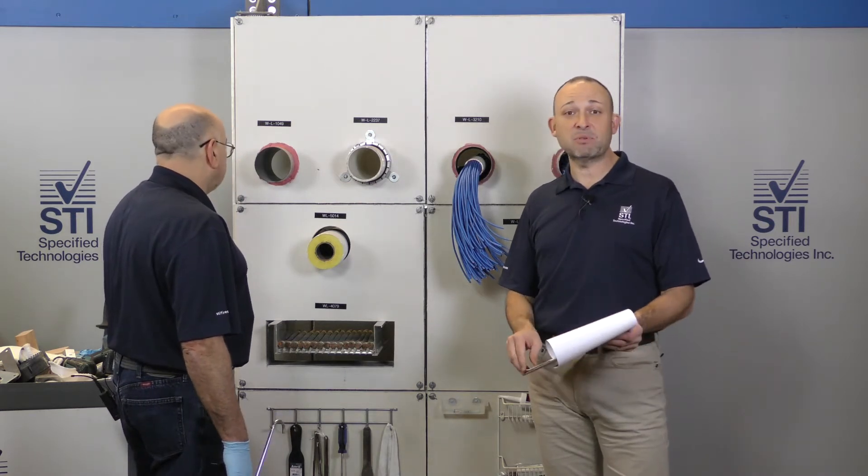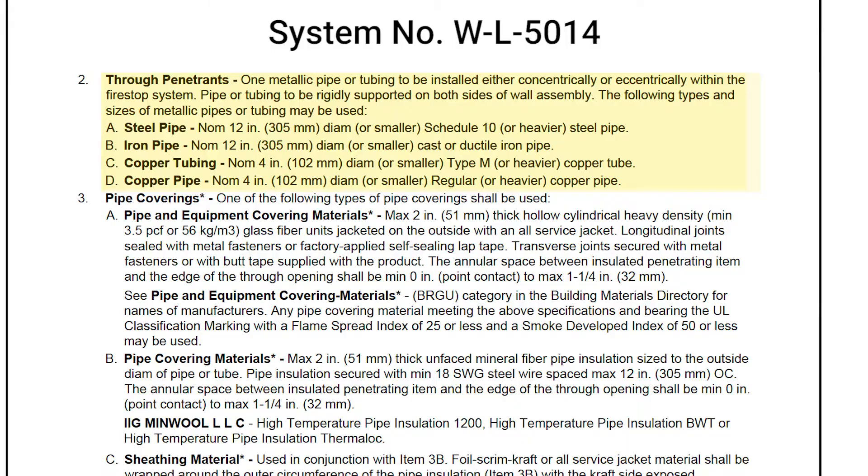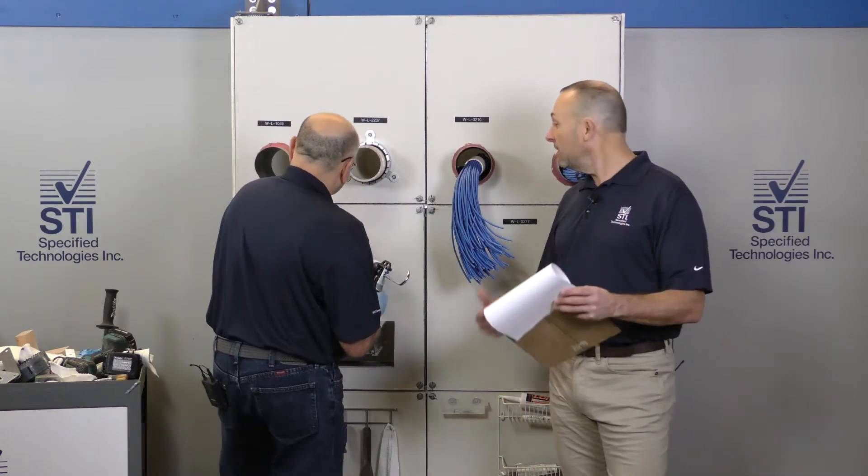This system gives us that optional steel sleeve, which we don't have in this case. We'll take a look at the through penetrance, steel pipe up to 12 inches, iron pipe up to 12 inches. Always check those maximums within that system.